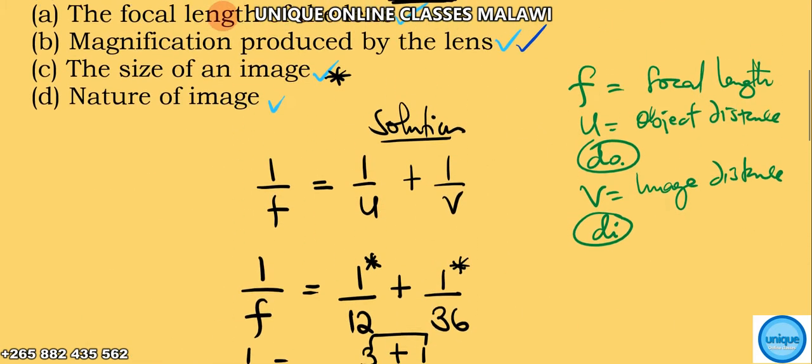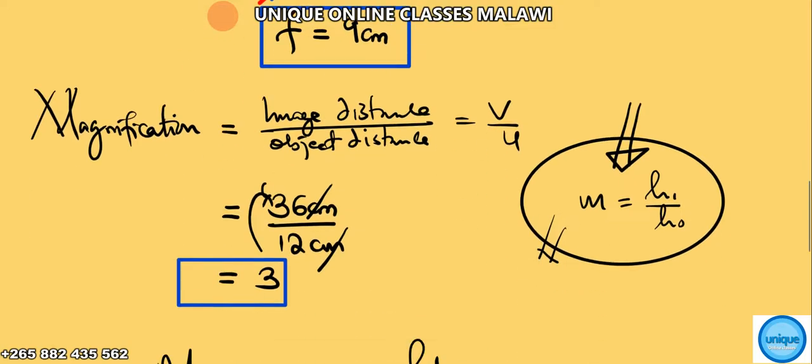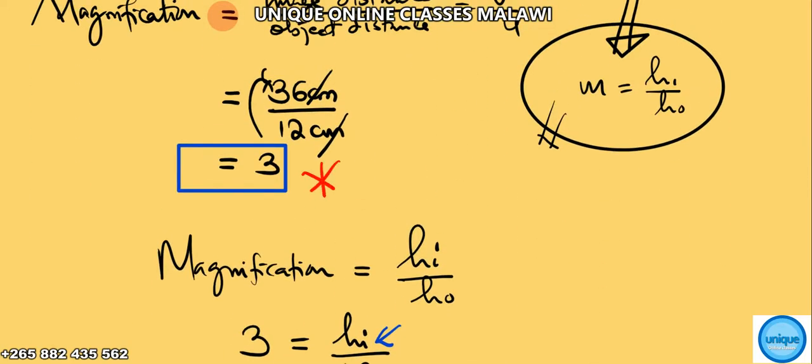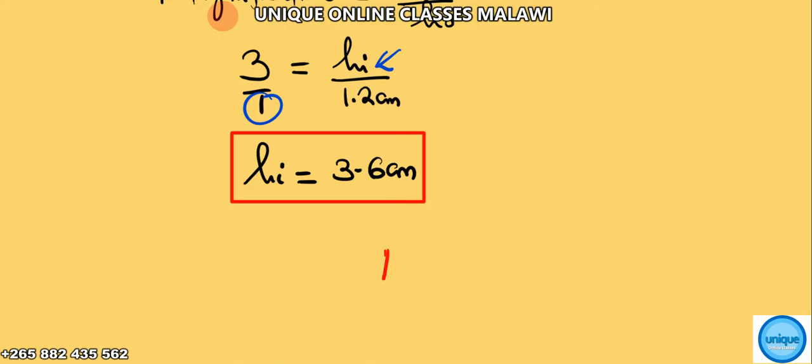Now the last question is the nature of the image. You can see the magnification is greater than one, so when we have a magnification greater than one, the image is magnified.